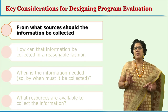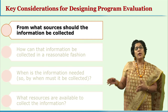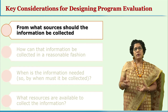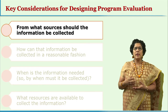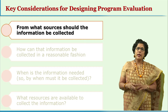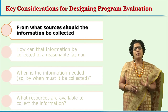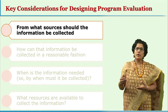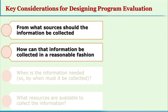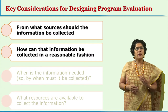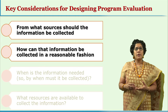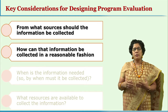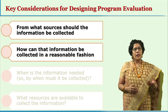The next consideration is: from what sources should the information be collected? The word 'sources' here is similar to 'population' in a research proposal. Just as in research one decides who is the best resource to provide the needed data, the same focus applies here: who is the best resource for the data needed for this program evaluation? This is followed by considering how that information can be collected in a reasonable fashion, pointing toward instruments and techniques for data collection, feasibility, and confidentiality.